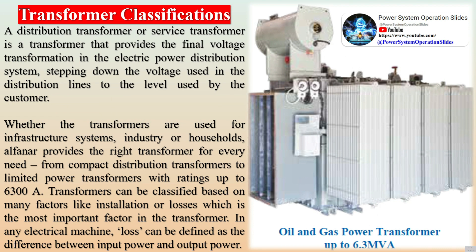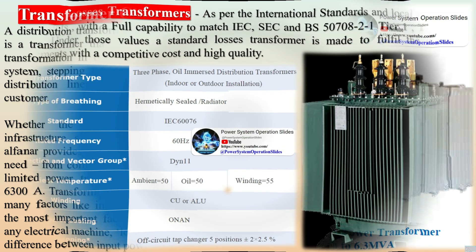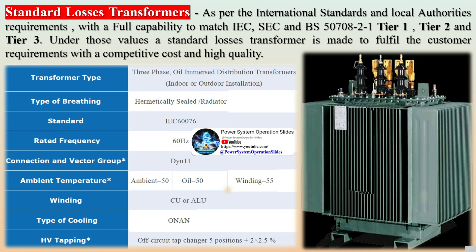Vector Group: The Vector Group is the International Electrotechnical Commission (IEC) method of categorizing the high-voltage (HV) and low-voltage (LV) winding configurations of three-phase transformers. The Vector Group designation indicates the winding configurations and the phase angle difference between them. The possible connections are: D – delta connection, Y – star connection, Z – zig-zag connection, N – neutral exists for connection outside the transformer. Each unit in the Vector Group refers to 30 degrees of displacement. For example, a Vector Group Dyn11 is delta on primary, star on secondary, with neutral brought out and 330-degree phase displacement.